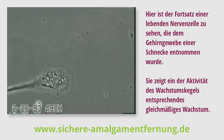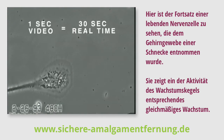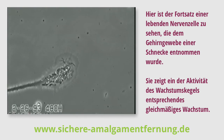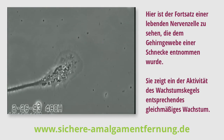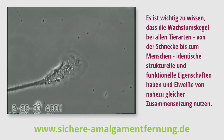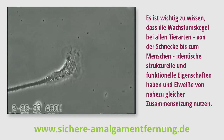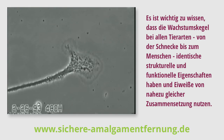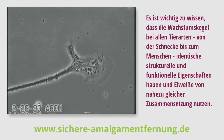Shown here is the neurite of a live neuron isolated from snail brain tissue, displaying linear growth due to growth cone activity. It is important to note that growth cones in all animal species, ranging from snails to humans, have identical structural and behavioral characteristics, and use proteins of virtually identical composition.